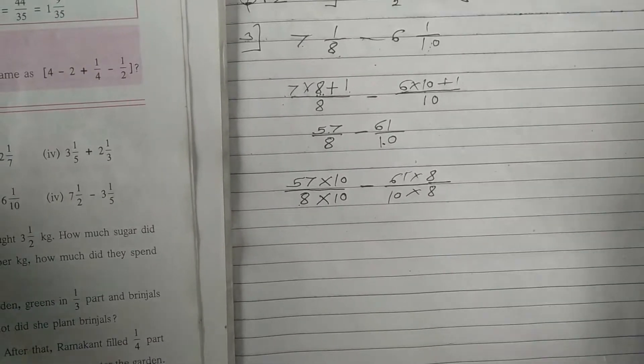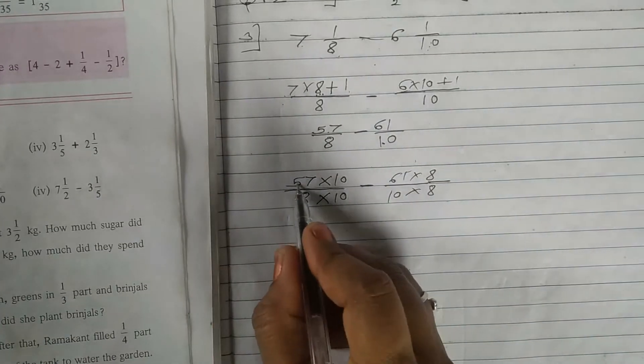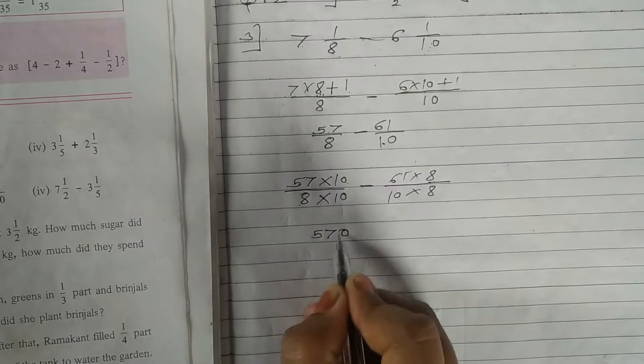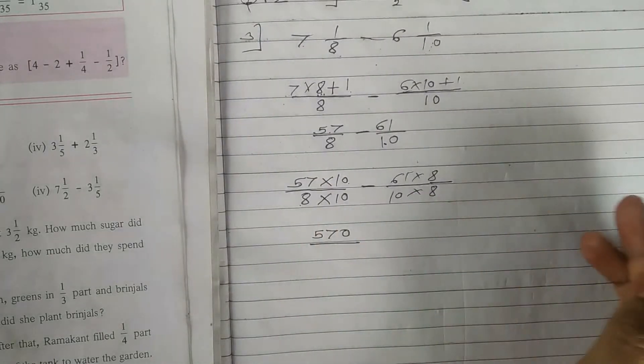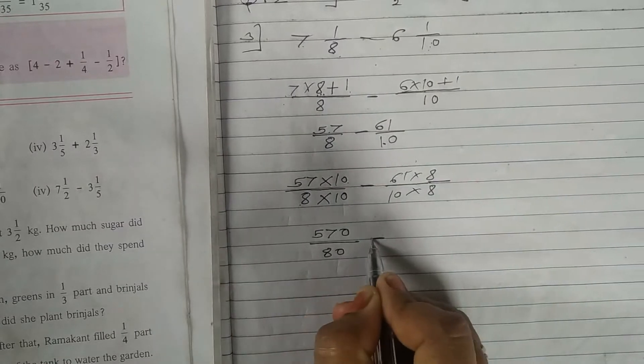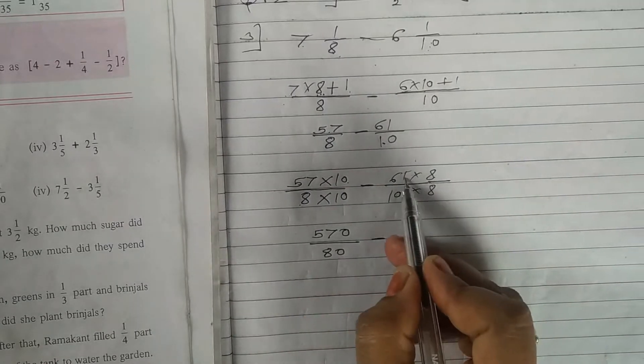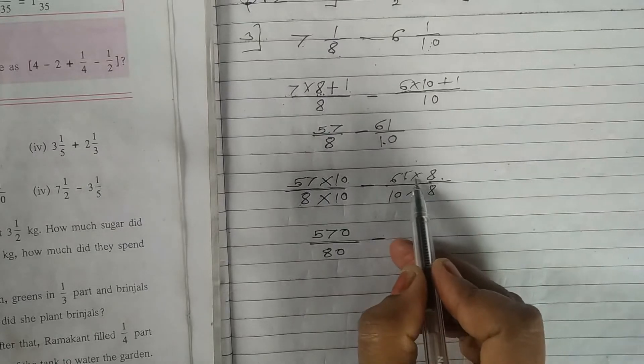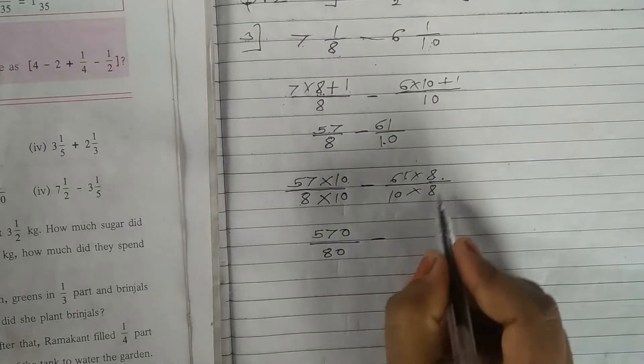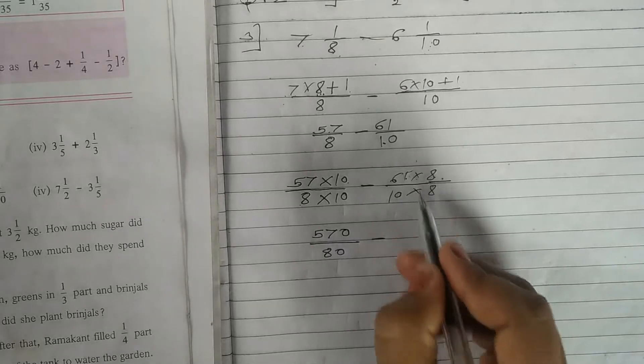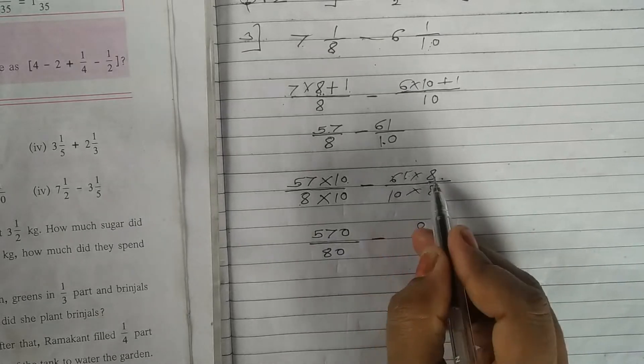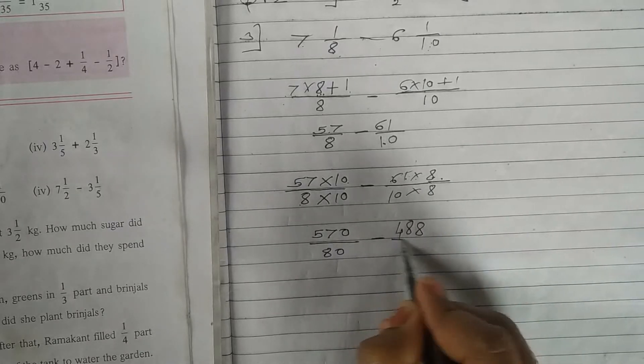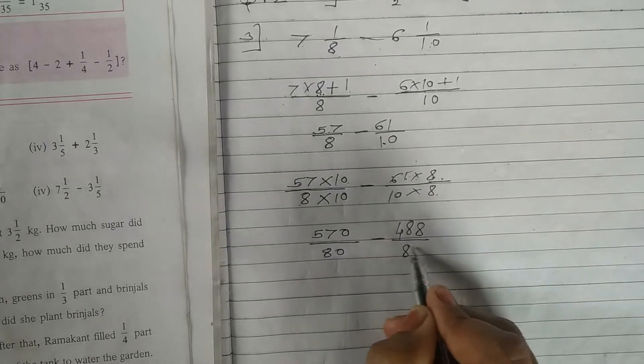Those required rough work, you may do rough work. Any number multiply by 10, 57 ones are 57, 1 0. 10 8's are 80 minus 61 multiply by 8. Those I again repeat, those have problem with this multiplication, do on rough page. I will do direct here. 8 1's are 8. 8 6's are 48 upon 10 multiply by 8, again 80.